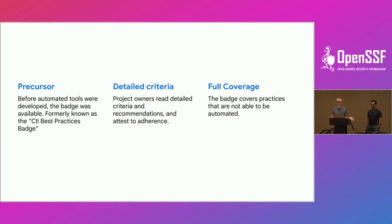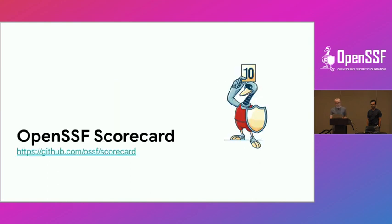As you'll see with the automation techniques later, there are limitations to what you can build inside of a tool. Getting on to the first tool, we're going to talk about Scorecard. Naveen is the maintainer of Scorecard and he's going to go over that.